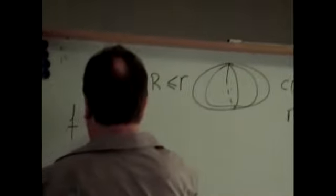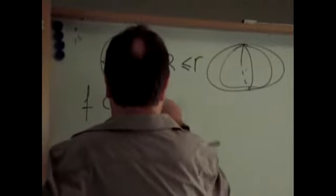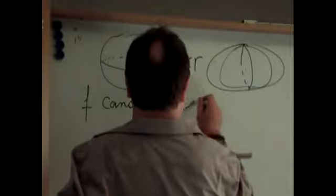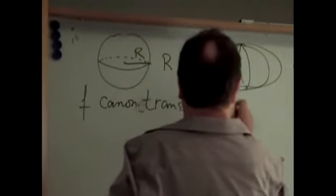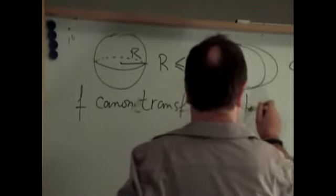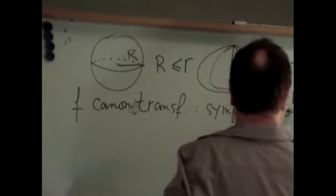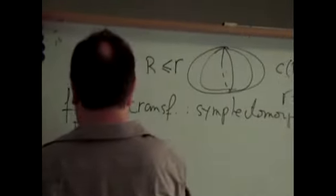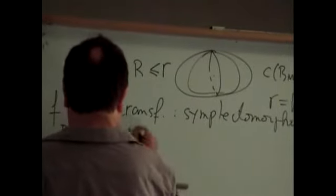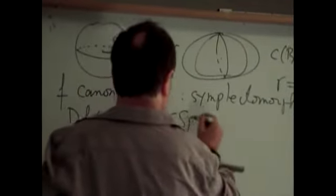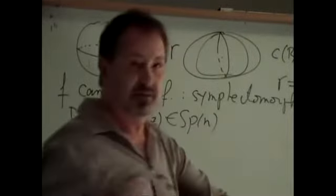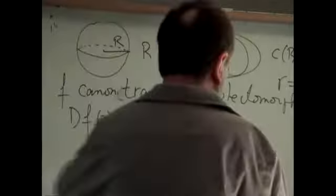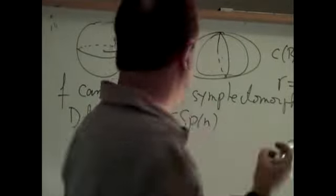Canonical transformation. F is a canonical transformation, or, as they are called in mathematics, symplectomorphism. So, a symplectomorphism if its Jacobian matrix, f prime z, is in Sp 2N, for every z for which it is defined. Now, okay, the thing is the same. This is a very deep theorem, which is called Gromov's non-squeezing theorem.